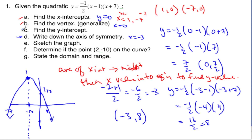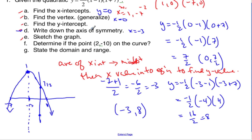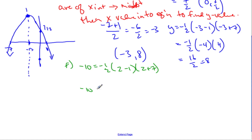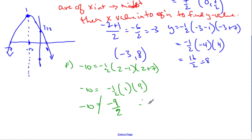So we've done parts a through e. Now: determine if the point (2, −10) is on the curve. We take our coordinate and plug it in. y equals negative 10; is that equal to negative one-half times (2 minus 1) times (2 plus 7)? That gives negative one-half times 1 times 9, which is negative 9 over 2. Negative 10 does not equal negative 9 over 2, so therefore the point is not on the graph.